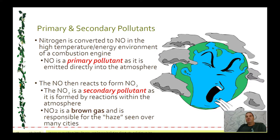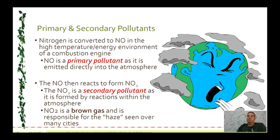When talking about photochemical smog, we need to discuss primary and secondary pollutants. Nitrogen in the air, when it reacts to form nitrogen monoxide, that's a primary pollutant — we're talking about manmade sources like combustion engines or factories. Those gases emitted directly into the air are primary pollutants. When those chemicals undergo further reactions and form new chemicals in the air, the new chemicals are called secondary pollutants. So when nitrogen monoxide reacts to form nitrogen dioxide, that brown gas, that's called a secondary pollutant.